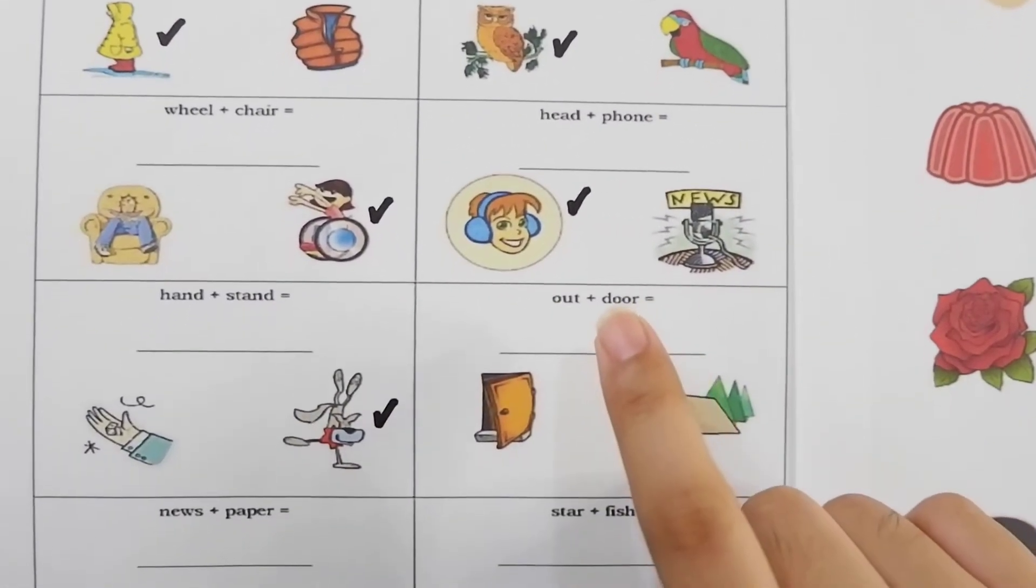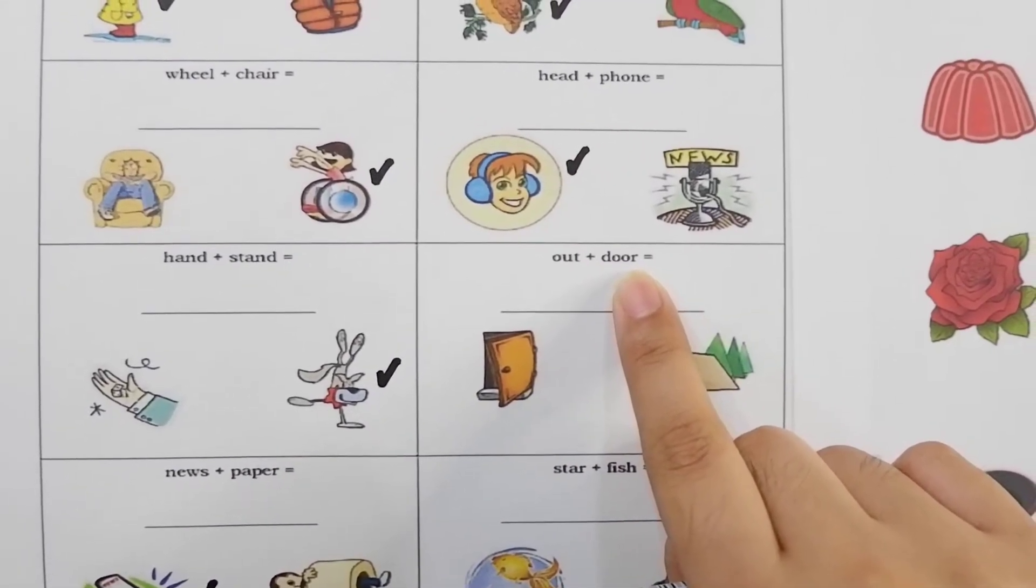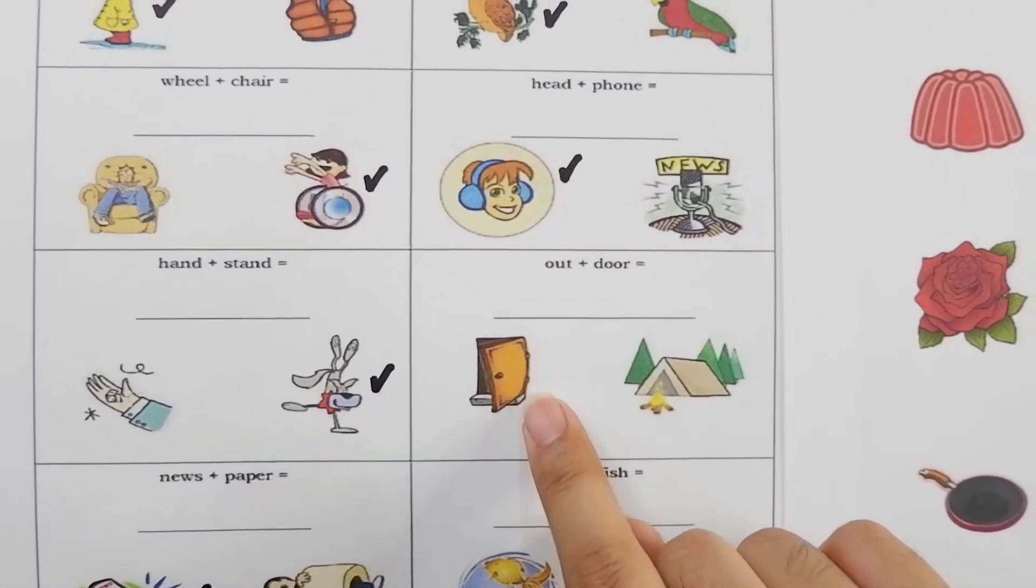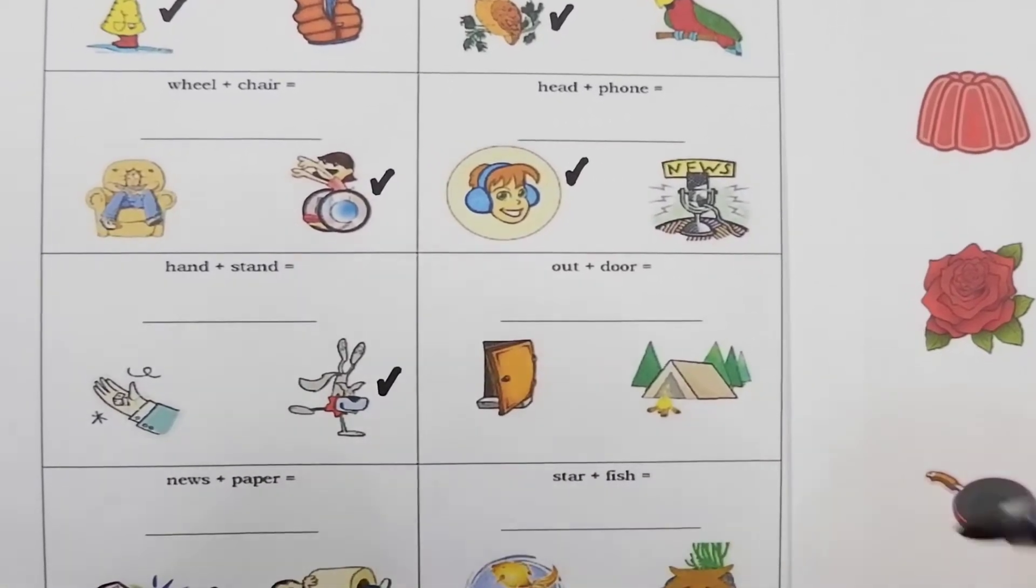Next example chameleons is out plus door. Put them together we get outdoors. It's this one. Camping outdoors.